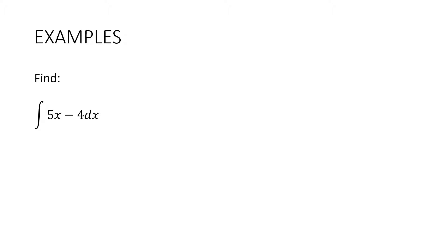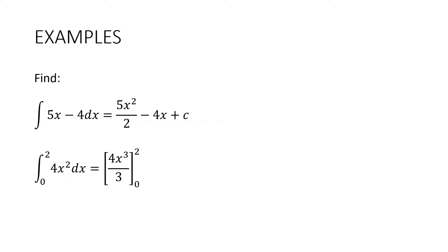This next one is an indefinite integral, integrating 5x minus 4: 5x becomes 5x squared over 2, minus 4 becomes minus 4x, and we must remember the plus c. For the definite integral example with limits, we get 4x cubed over 3. You might wonder about the plus c — we don't actually need it, because when we substitute the upper limit and subtract the lower limit, the c's cancel out. So with a definite integral, you don't have to worry about the constant.